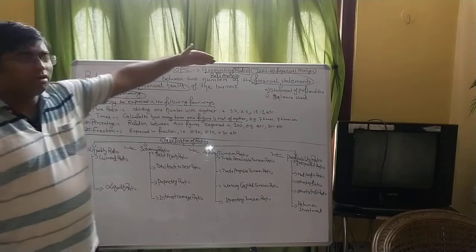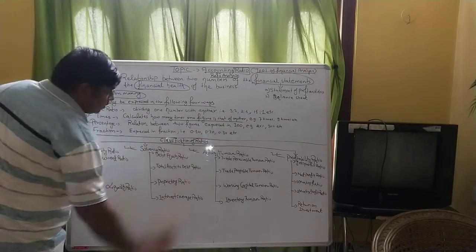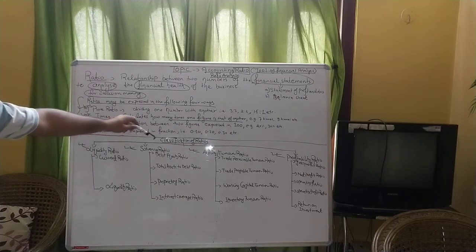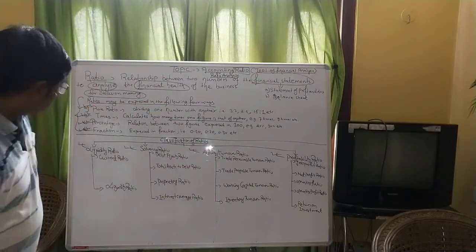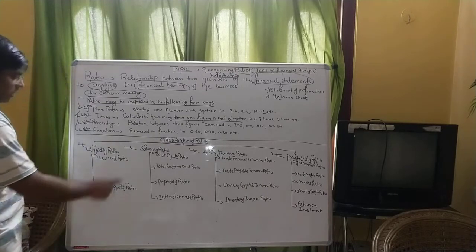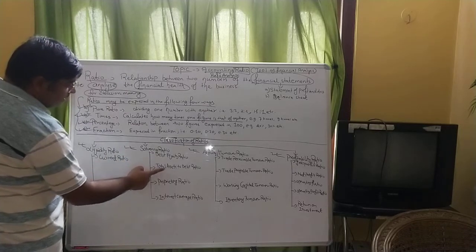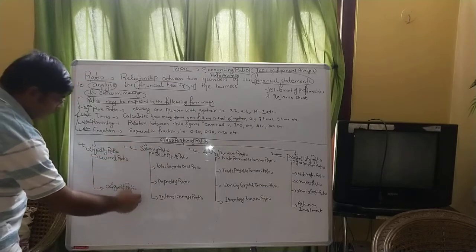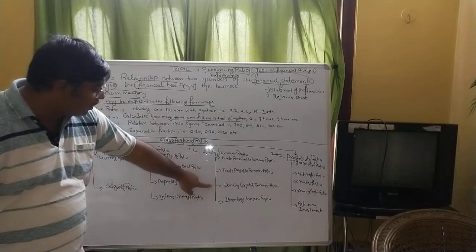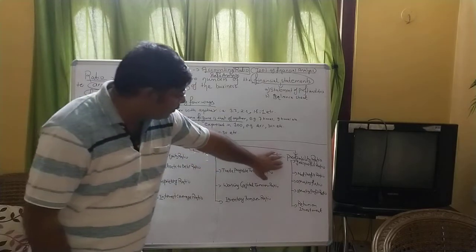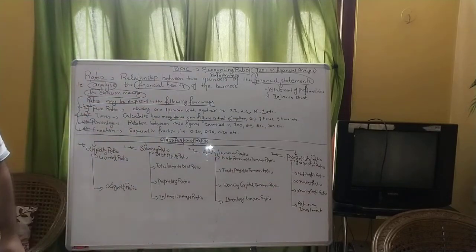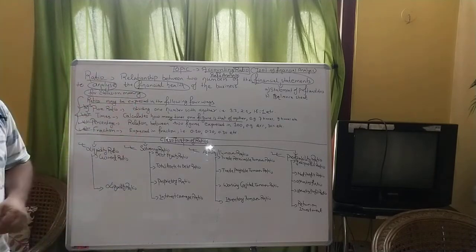Ratios have been broadly classified into four categories. First, liquidity ratio — subdivided into current ratio and liquidity ratio. Second, solvency ratio — using four formulas: debt-equity ratio, total assets to debt ratio, proprietary ratio, and interest coverage ratio. Third, activity or turnover ratio — including trade receivables ratio, trade payables ratio, working capital ratio, and inventory turnover ratio. Fourth, profitability ratio — including gross profit ratio, net profit ratio, operating ratio, operating profit ratio, and return on investment.